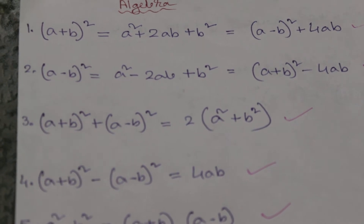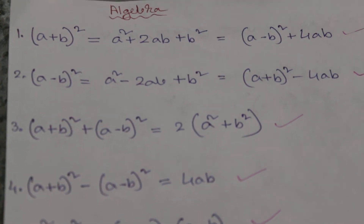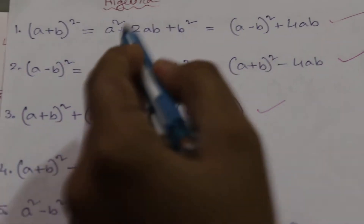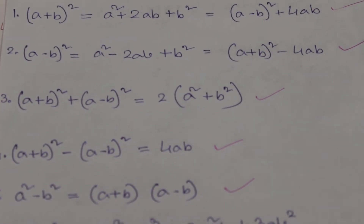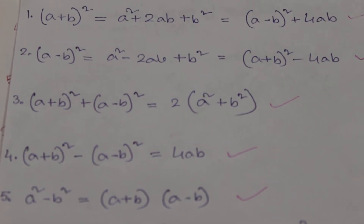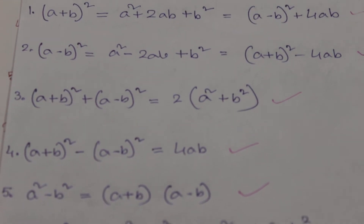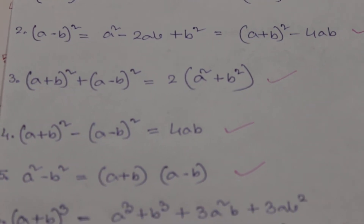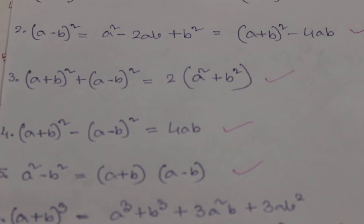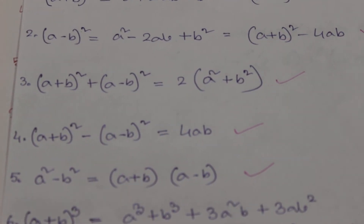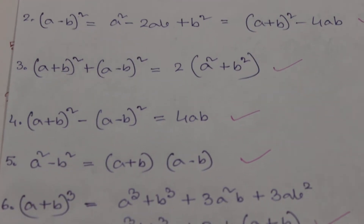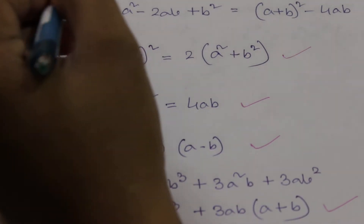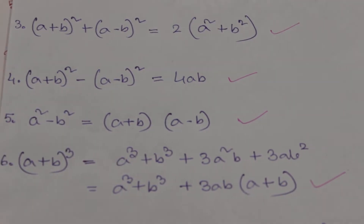So let's start. The first one is (a + b) whole square, that is equal to a square plus 2ab plus b square. We can also write it as (a - b) whole square plus 4ab. The next one is (a - b) whole square, that is equal to a square minus 2ab plus b square, and also (a + b) whole square minus 4ab.